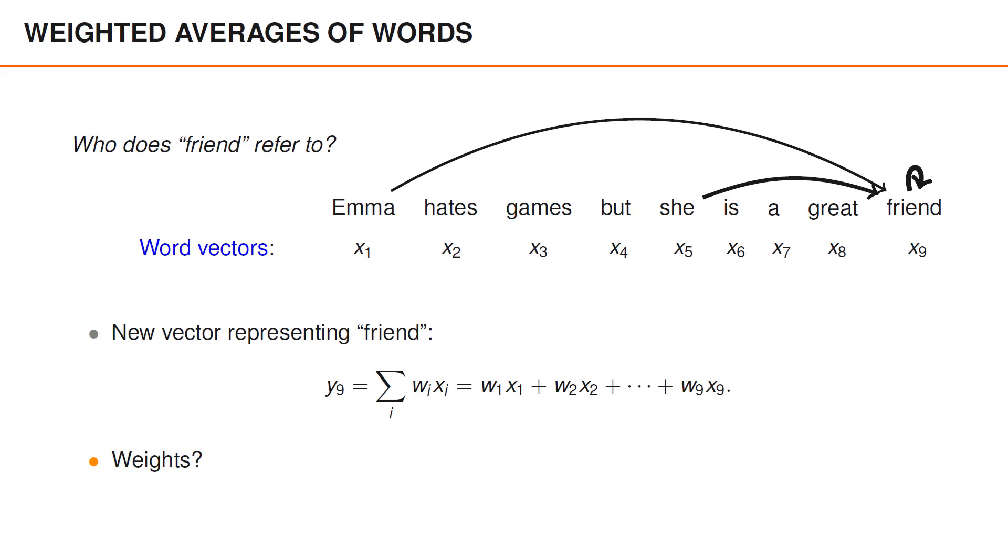The new vector y9 that we compute is adapted to the context of this sentence where the friend is a female person named Emma.